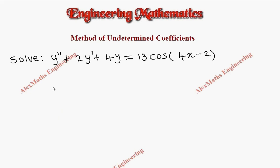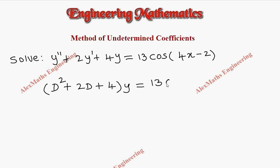As a first part, we have to rewrite the equation. The first term is D², second term is 2D, and third term is 4, into y, equal to 13 cos(4x - 2).